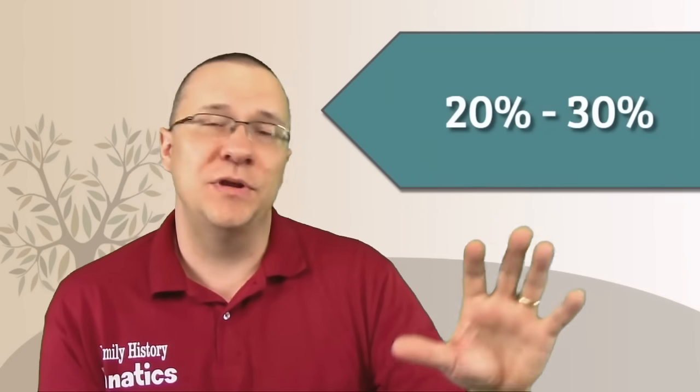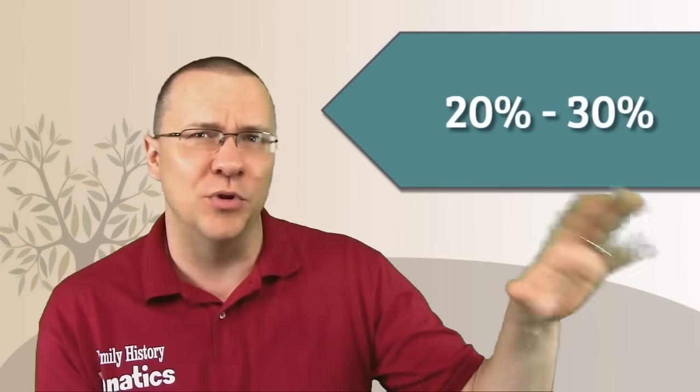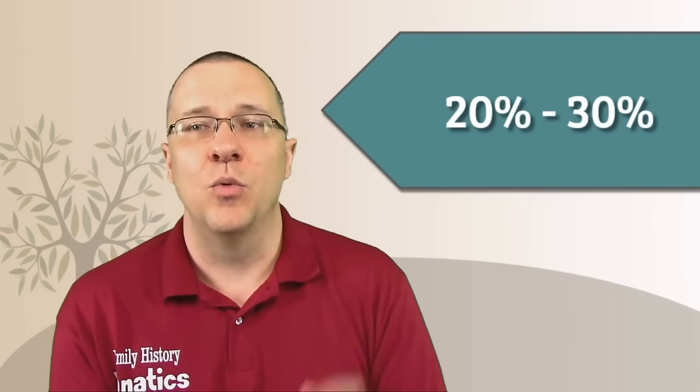So where is this range of DNA? It's about between 20% and 30%. So you should expect to see numbers that are in this range. Now there's some extreme cases that may go below this or may go above this, but those are actually pretty rare. For the vast majority of people, if you compare your DNA with any of your grandparents, you'll find that you share about 20% to 30% of your total DNA with them.